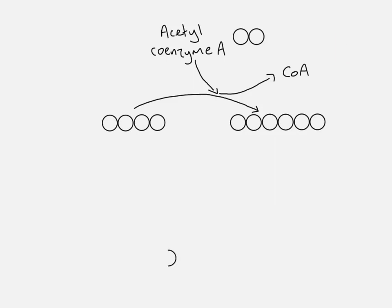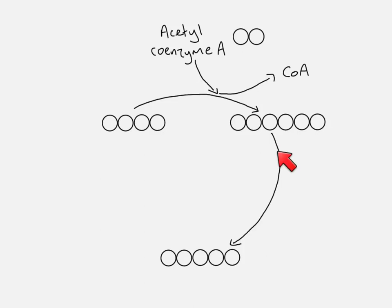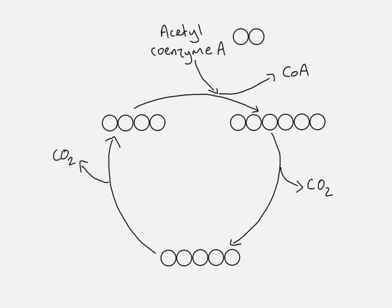Our six carbon molecule then becomes a five carbon molecule, meaning we've lost carbon again — so this is decarboxylation and carbon dioxide is given off. Our five carbon molecule is then also decarboxylated, carbon dioxide is removed, and we get back to our original four carbon molecule. This has been regenerated, which means it can combine with more acetyl coenzyme A and the cycle can continue.